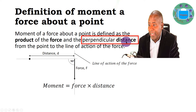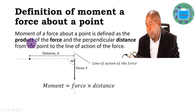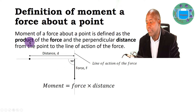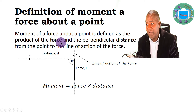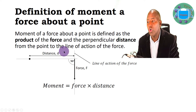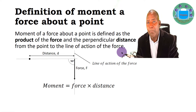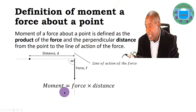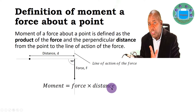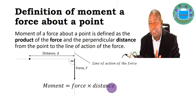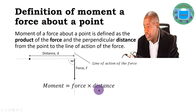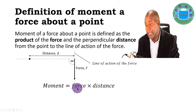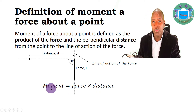The moment equals the product of the force and the perpendicular distance from the point to the line of action of the force. Since force is in newtons and distance in meters, the SI unit of moment is newton meters. It is worth noting that multiplying force and distance also gives work, but in that case the force and distance are in the same direction — parallel. For moment, the force and the distance must make 90 degrees with each other. That is the key distinction between moment and work.